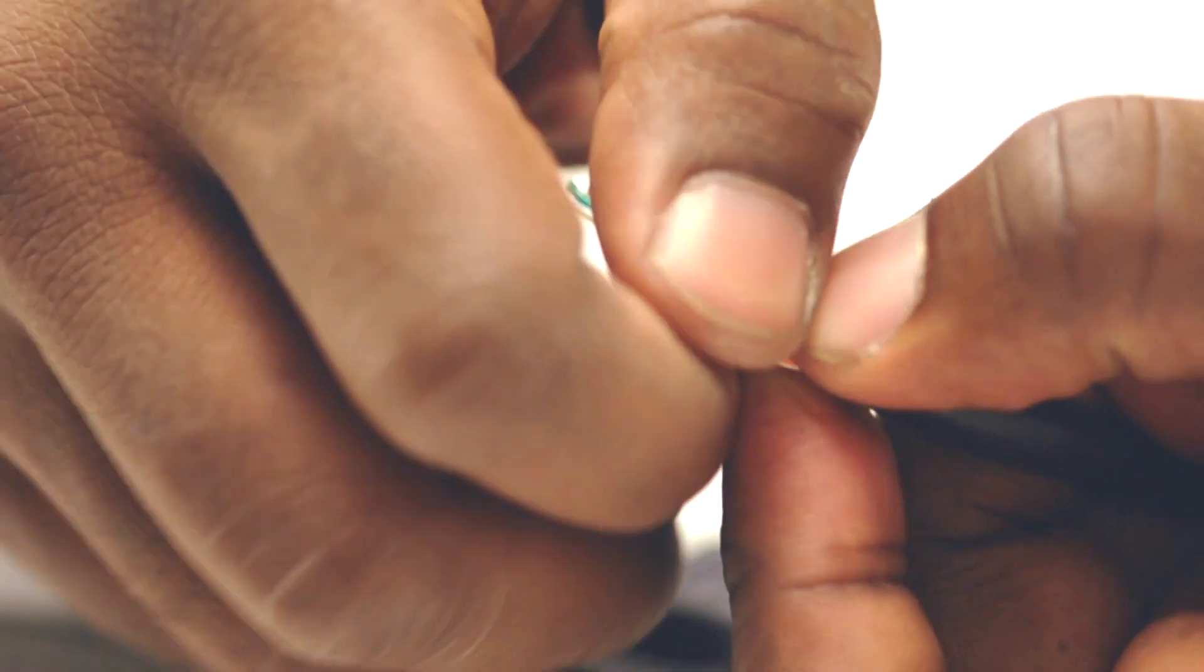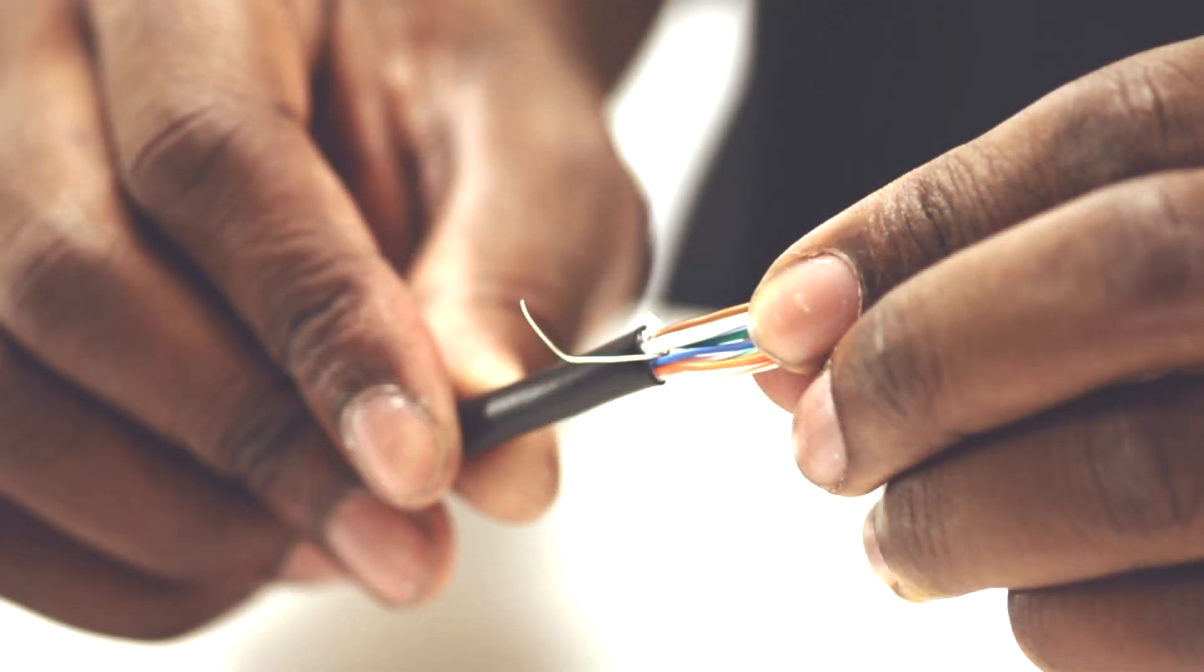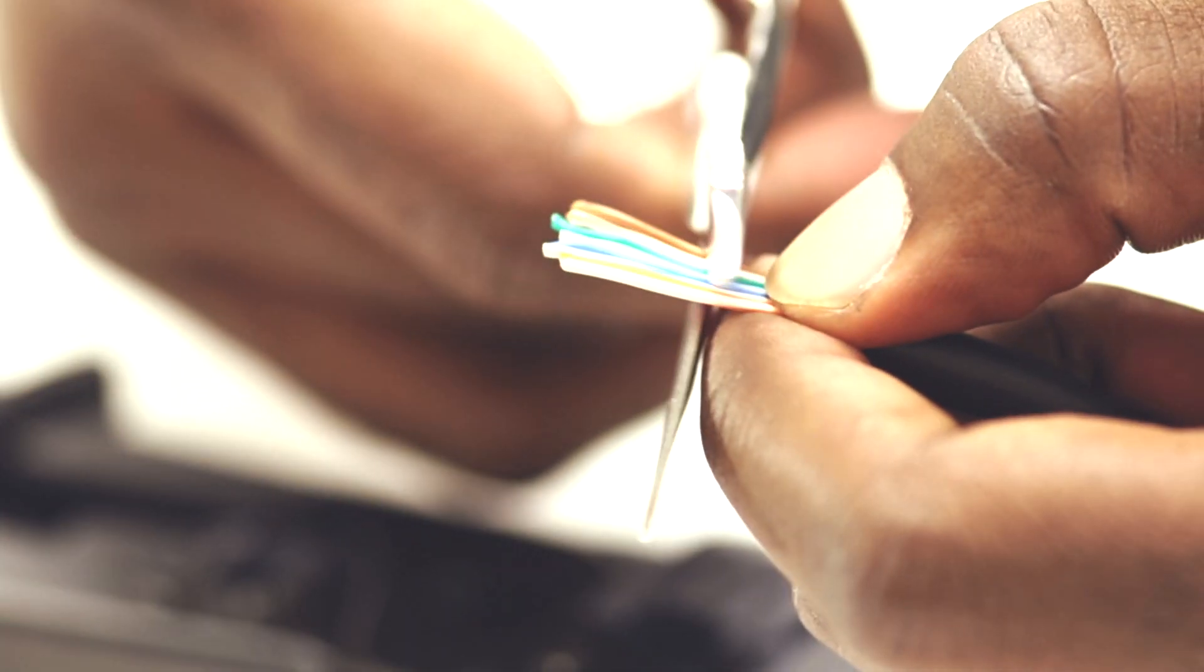Once we have done that we are going to bring our wires together and trim them about half an inch from the jacket.